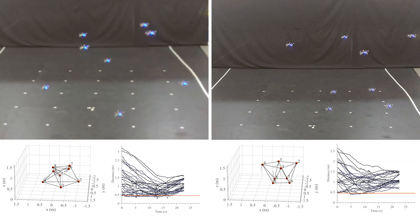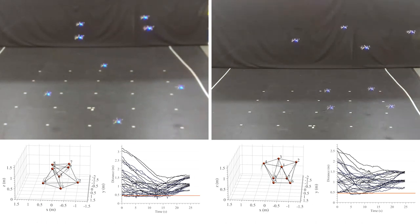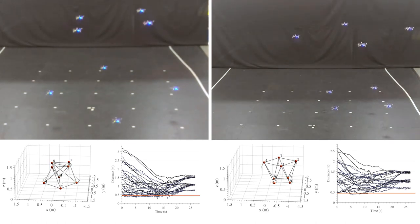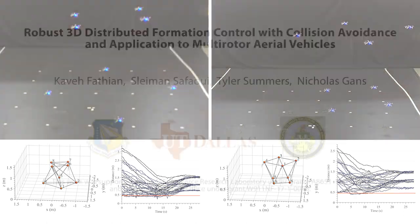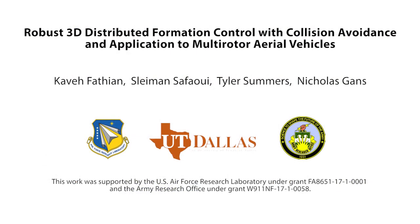The proposed collision avoidance strategy can cause gridlocks due to its distributed nature. Resolving gridlocks using inter-agent communications is a topic of our future work.